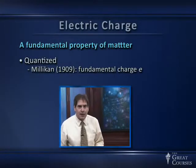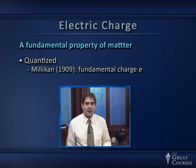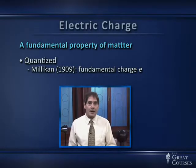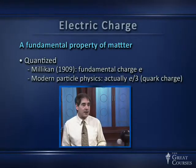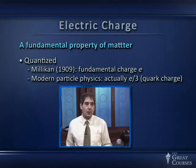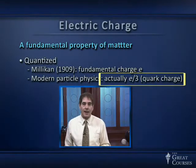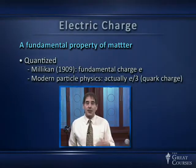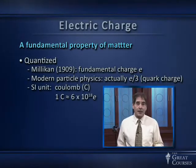Charge is also quantized — it comes in discrete little amounts. It was Robert Millikan in 1909 who discovered the fundamental charge, given the symbol e. We now know that the truly fundamental charge is actually one-third of e, which is the charge on quarks — subatomic particles that make up protons and neutrons. They carry charges of one-third and two-thirds e, positive or negative. Electrons carry charges of exactly e or minus e, and protons carry exactly plus e, even though those particles are dramatically different.